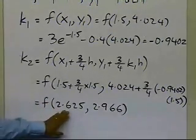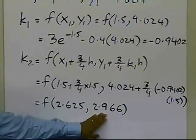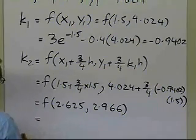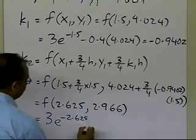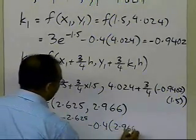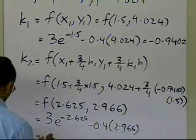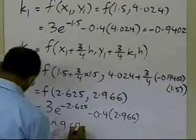So this is the point where we want to calculate the slope, and this is the corresponding approximate value of y which we are getting here. And when we substitute this into our function f, which will be 3 e to the power minus the value of x minus 0.4 times the value of y, this k2 value turns out to be minus 0.9692.